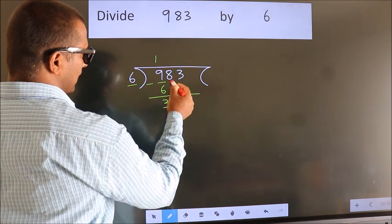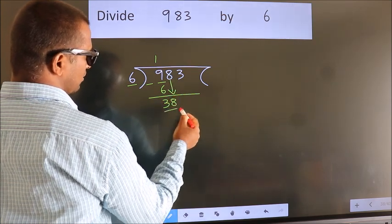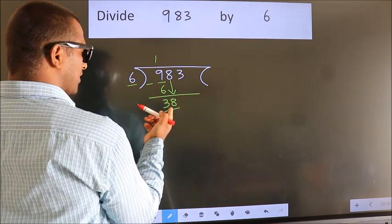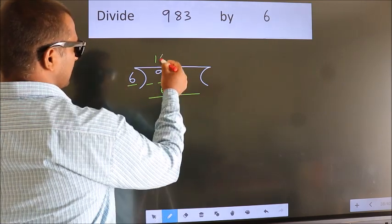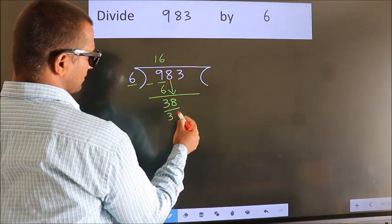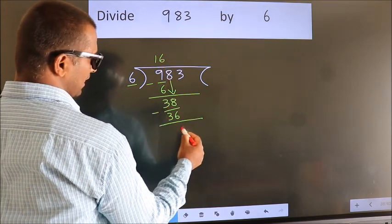After this, bring down the beside number. So, 8 down, giving us 38. A number close to 38 in the 6 table is 6 times 6, which is 36. Now we subtract and get 2.